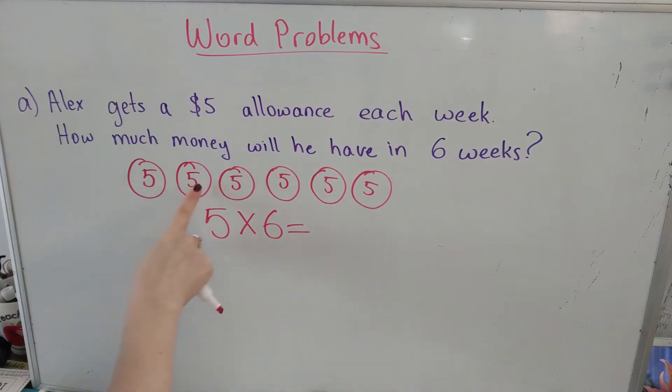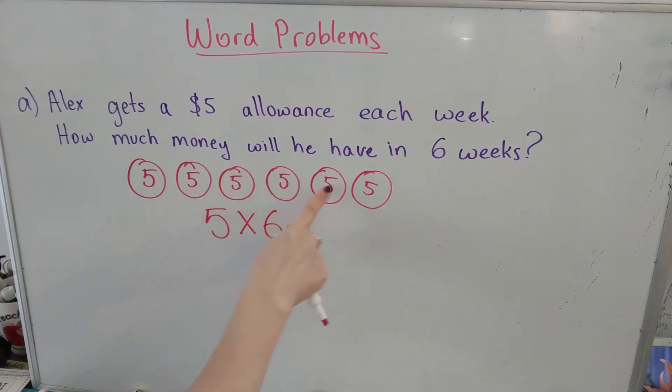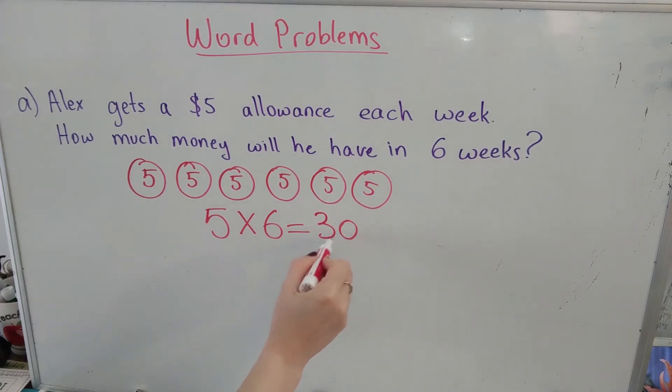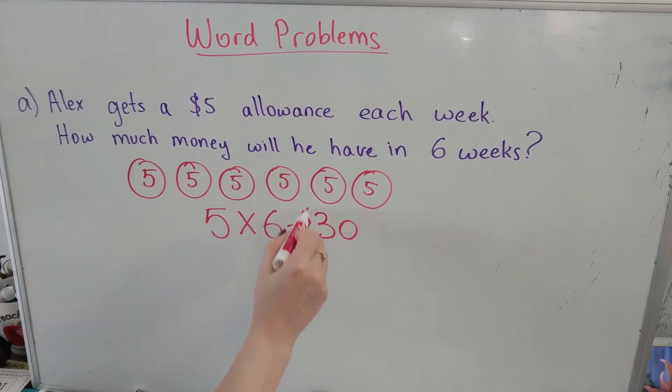5, 10, 15, 20, 25, 30. Five times six is 30. So our answer is $30.